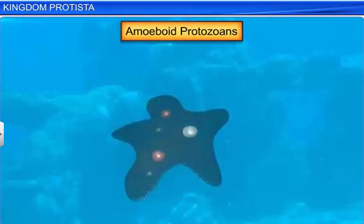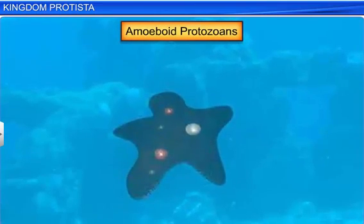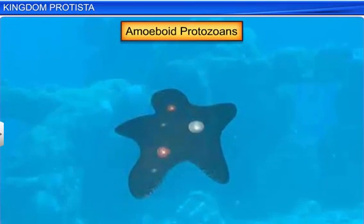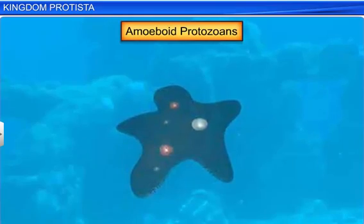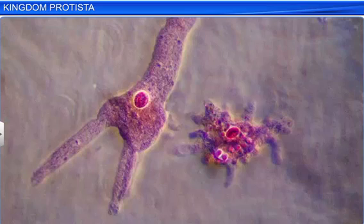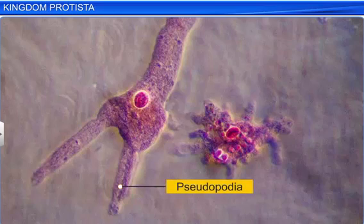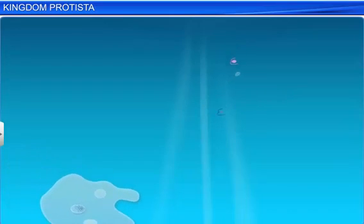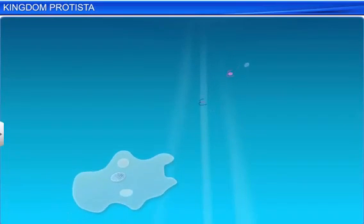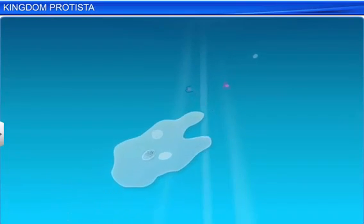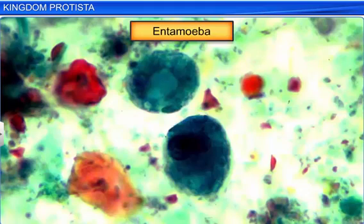Amoeboid protozoans are found in fresh water, marine water, as well as moist soils. They use false feet called pseudopodia to move and capture their prey. Some amoeboids, like Entamoeba, are parasites.